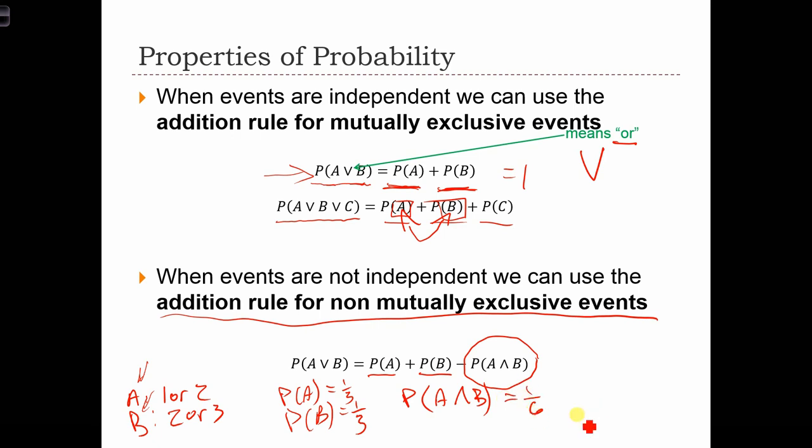So, in order to calculate the probability of A or B occurring, we have to add up one-third plus one-third, that's the probability of A plus the probability of B, minus one-sixth, the probability of A and B. And this is equal, in the end, to one-half.